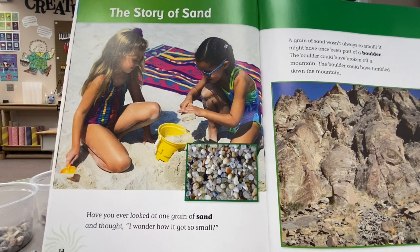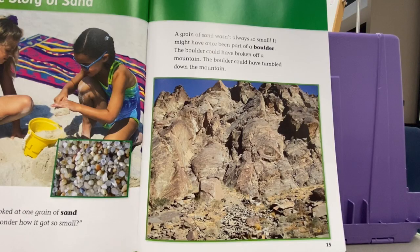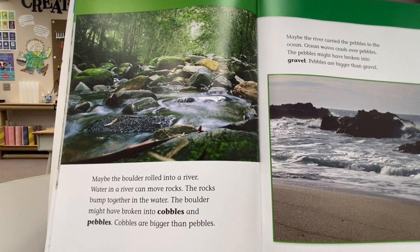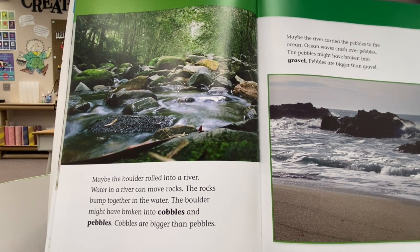The story of sand. Have you ever looked at one grain of sand and thought, I wonder how it got so small? A grain of sand wasn't always so small. It might have once been part of a boulder. The boulder could have broken off a mountain. The boulder could have tumbled down the mountain. Maybe the boulder rolled into a river. Water in a river can move rocks. The rocks bump together in the water. The boulder might have broken into cobbles and pebbles.